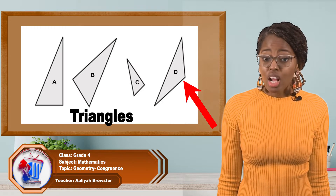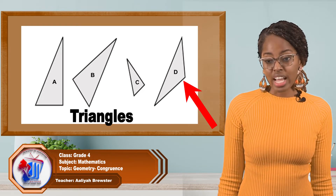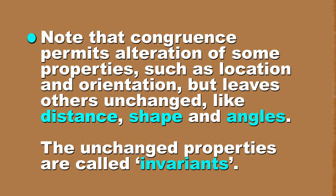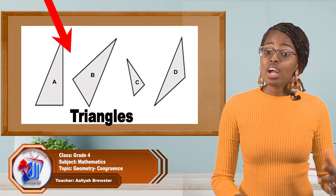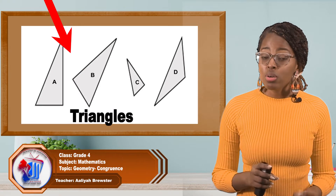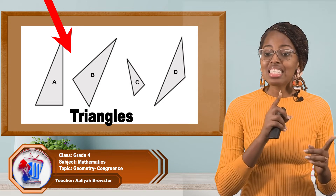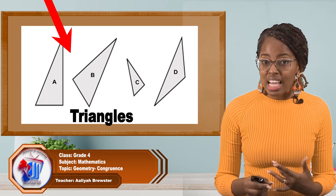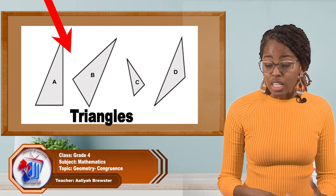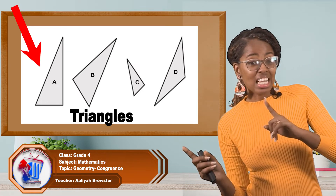Note that congruence permits alteration of some properties, such as location and orientation, but it leaves others unchanged, like distance, shape, and angles. The unchanged properties are called invariants. This means that triangle A and B are congruent because they have the same angle, the same size or the same measurement, even though triangle A is slightly tilted.